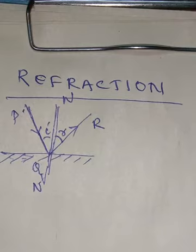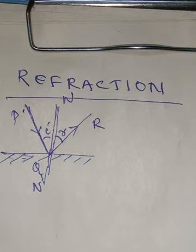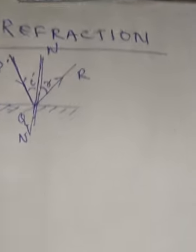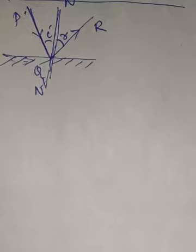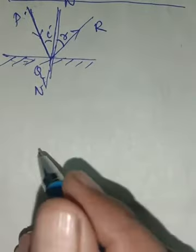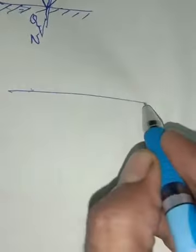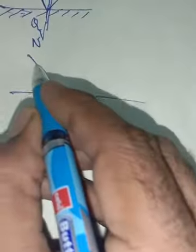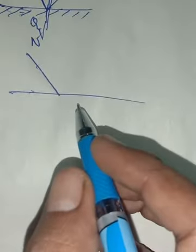In case of reflection, one surface is there. In the same surface, the ray of light will be reflected back — only in one medium it will be reflected back. Now, in case of refraction, what will happen? When a ray of light passes from one medium and enters into another medium.